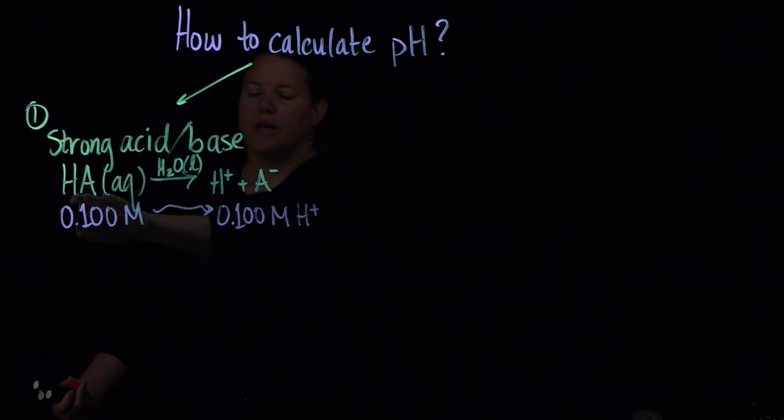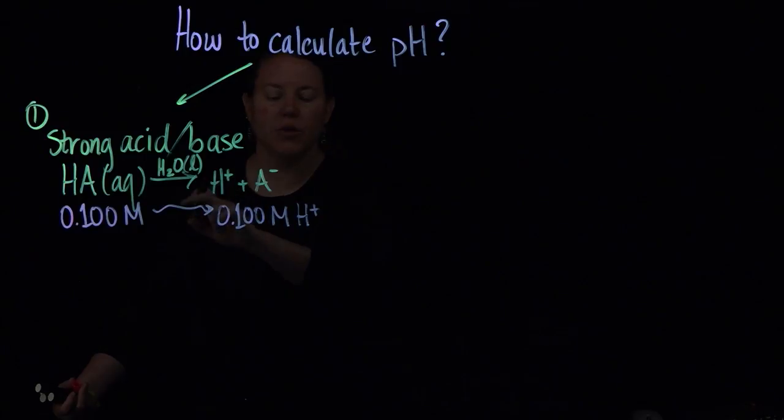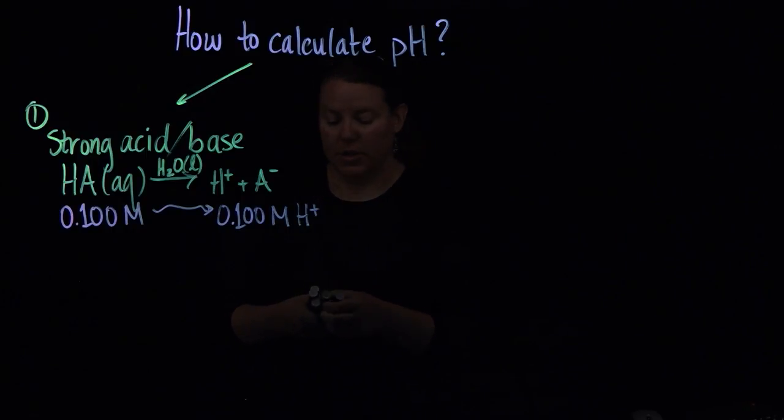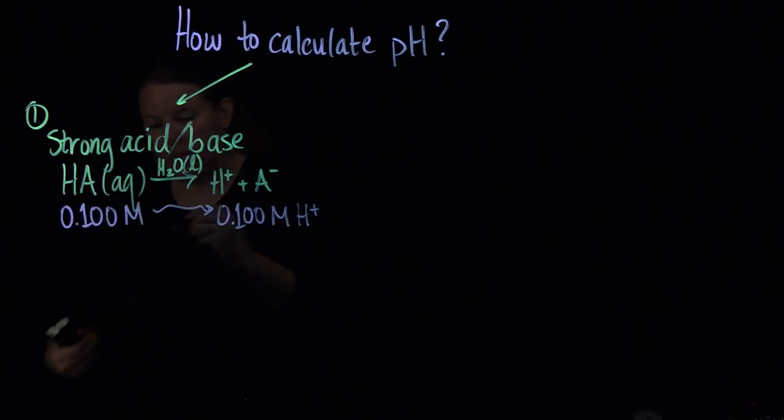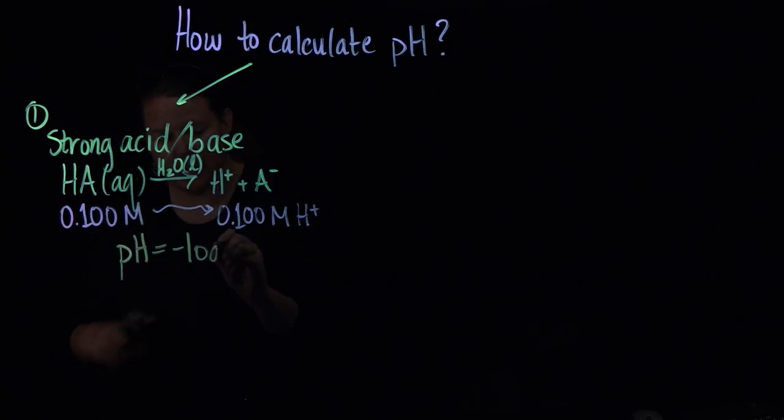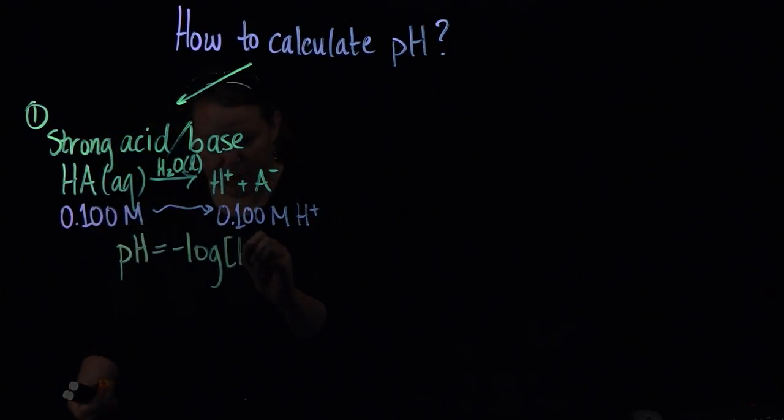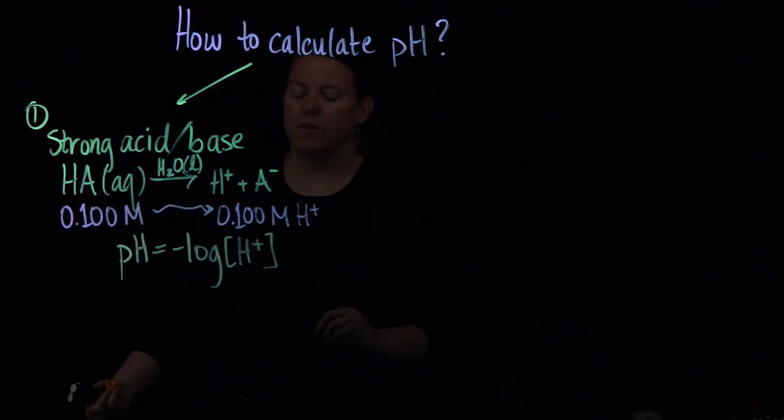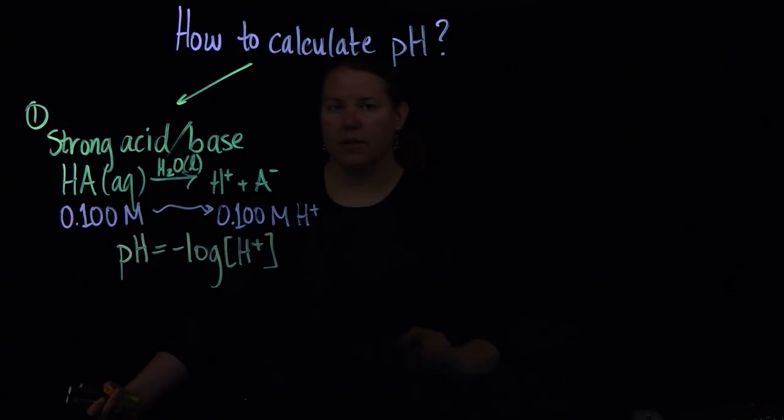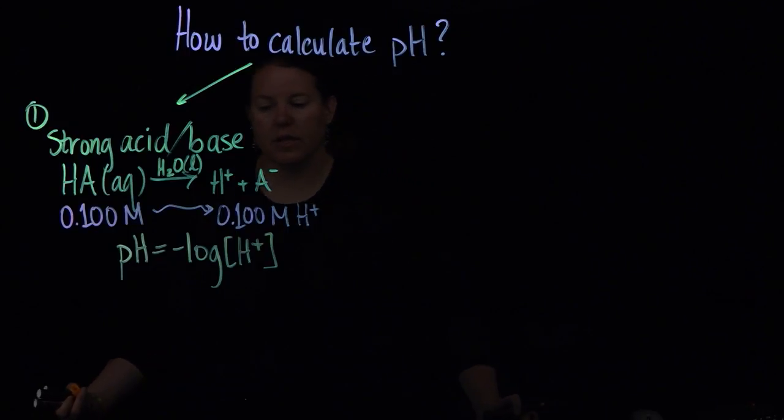If this acid was strong and gave off two H's, then I'd need to multiply my initial number by two. And then I can just plug that into the pH formula. pH formula is pH equals the negative log of the H plus concentration. And I just plug that in and I get a number. And in this case, I would get, this is 10 to the negative first in terms of molarity, so I'd get a pH 1.